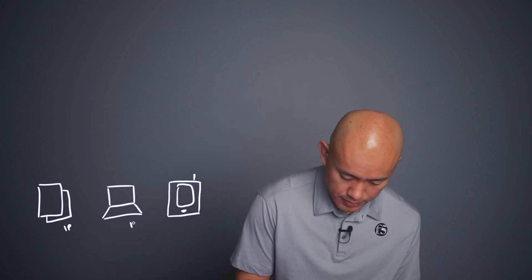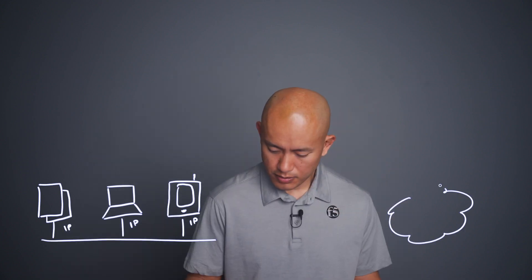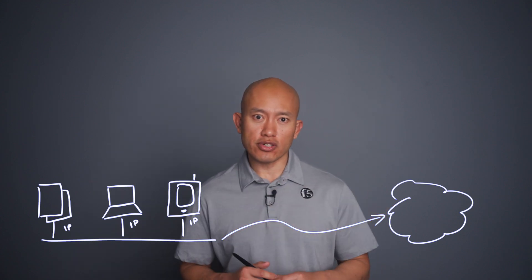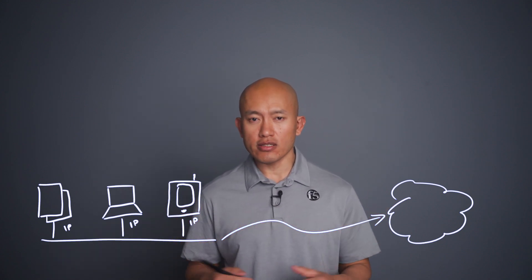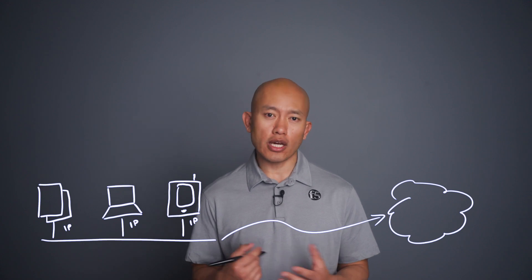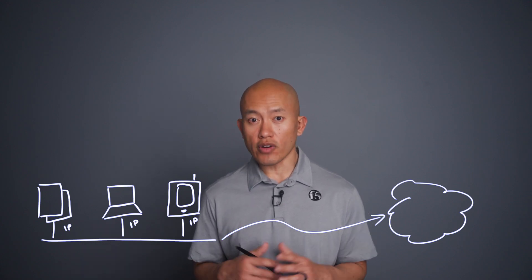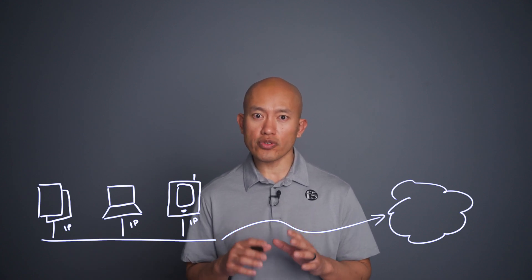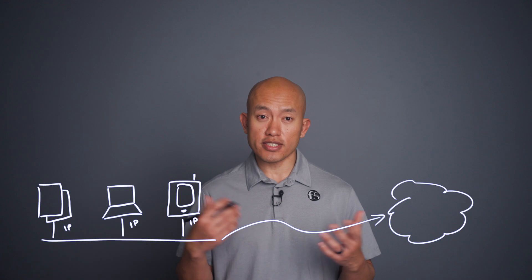To build on that, devices like servers, PCs, and mobile devices all have IP addresses for communicating on a local network and out to the internet. When you're running the network of an organization, a lot of planning goes into your IP addressing. You'll find yourself organizing areas, whether logical or physical, into blocks of IP addresses called subnets.